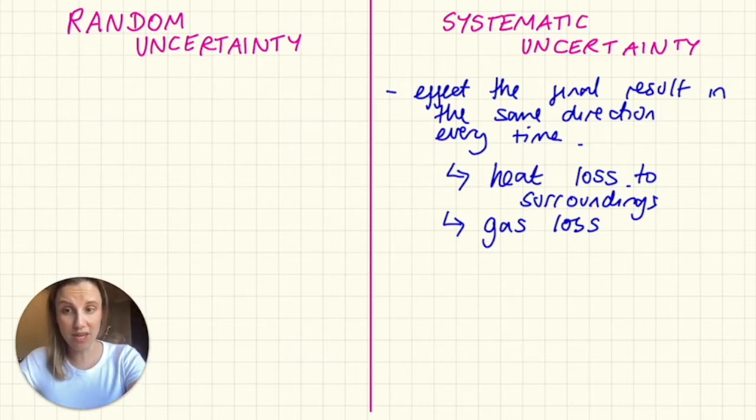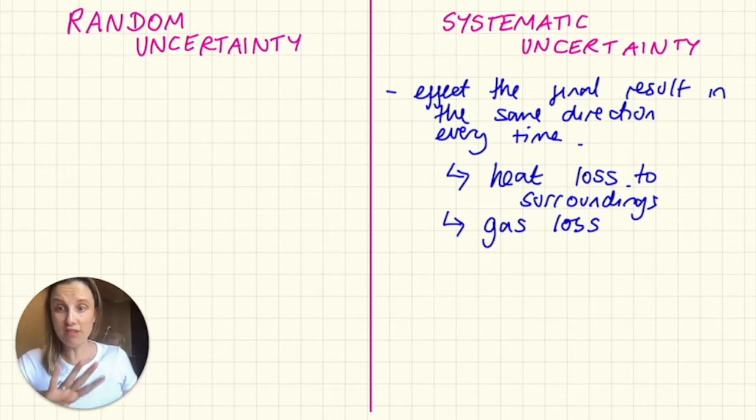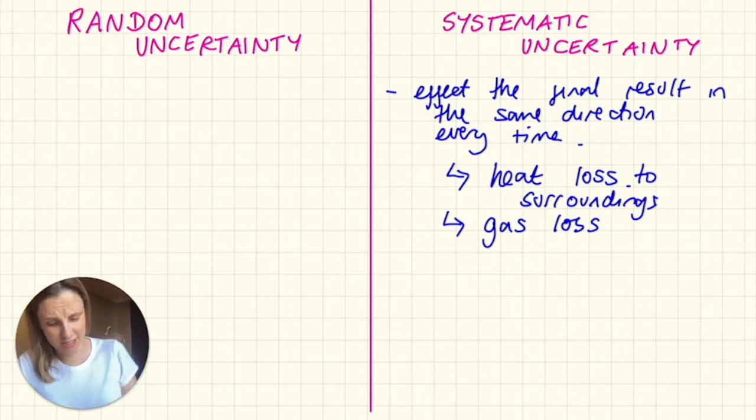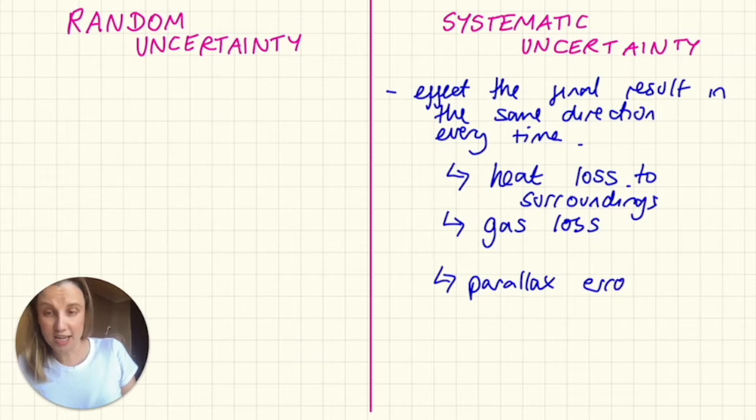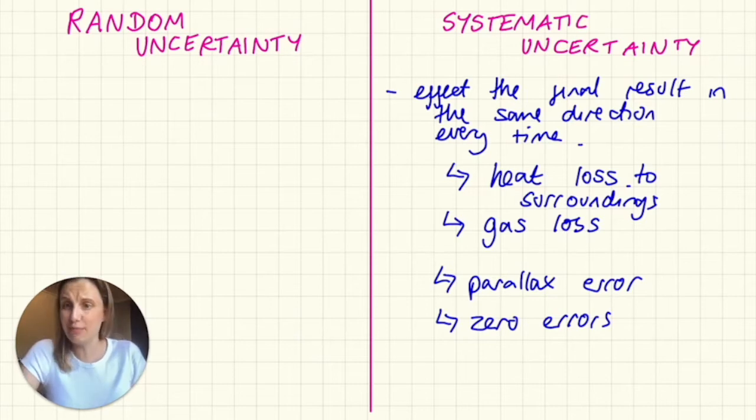Now when the IB are talking about this, they're generally looking for things that are a problem with your experimental design, not a problem with you being a bad scientist. So there are examples of systematic uncertainties that are you being a bad scientist, things like parallax error, so you not reading your burette at the meniscus level, things like zero errors on pieces of equipment, not zeroing things properly, or maybe just them not being calibrated properly, which definitely isn't your fault.